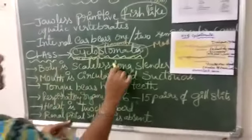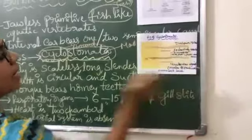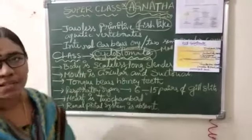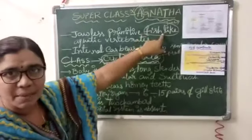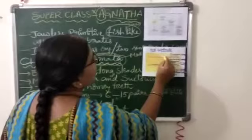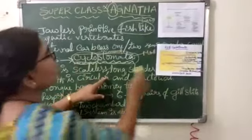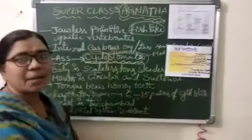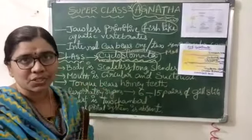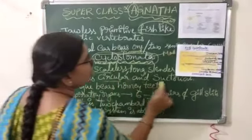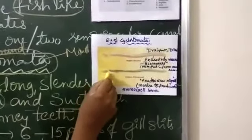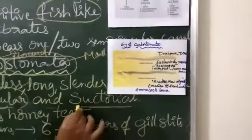The body is scaleless, long, slender, and eel-like. Generally fishes have scales, but in these animals scales are absent. The body is cylindrical in shape and eel-like in structure. The mouth is circular and suctorial — suctorial means they can fix onto any other body and suck food material.